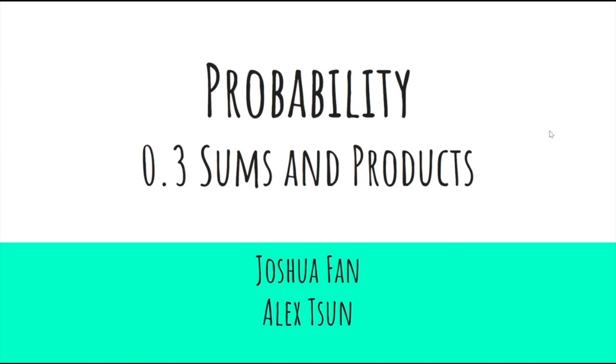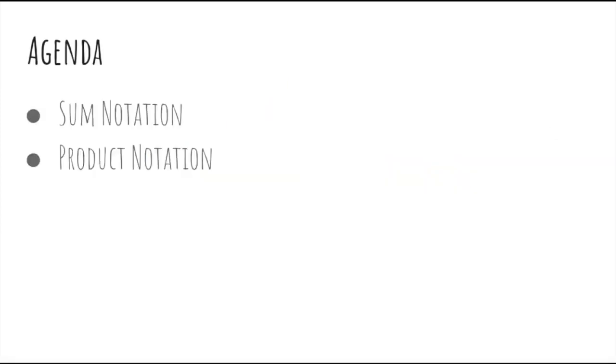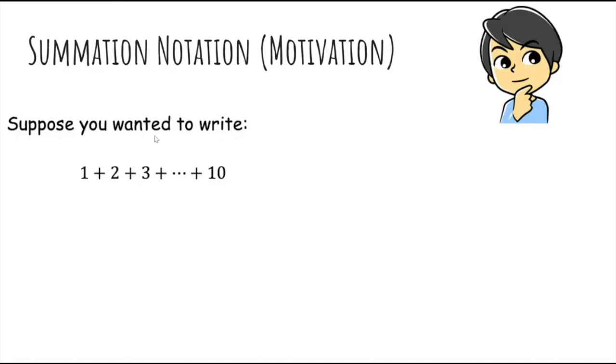Hi, in this video we'll introduce some really important notation for dealing with sums and products more concisely. So as an example, suppose you wanted to write the sum of all integers between 1 and 10 inclusive, or the sum of all squares from 16 to 81. This is a lot of terms to write by hand. Thankfully, there's a better way.